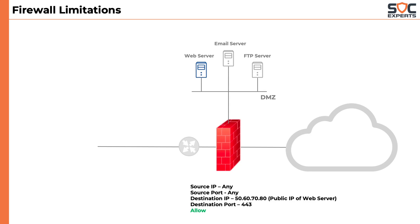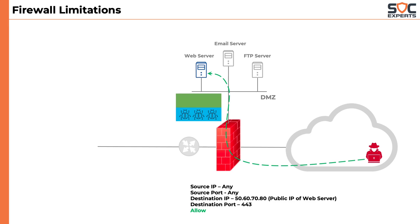Because anyone can connect to our website on port number 443, what if a user on the internet connects to our web server on the allowed port but sends some malicious content in the payload? Because traditional firewalls are only concerned about the TCP/IP header, any malicious content in the payload won't be detected by firewalls.